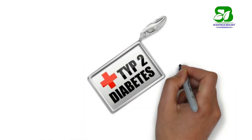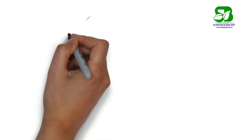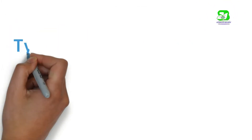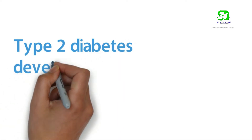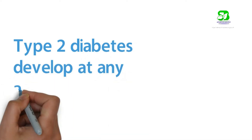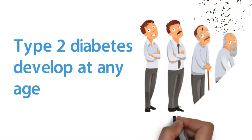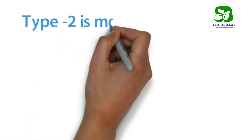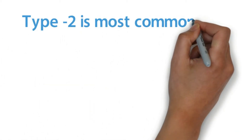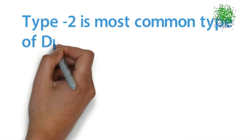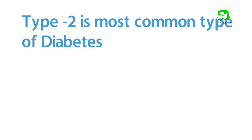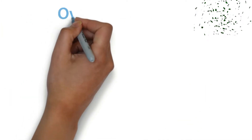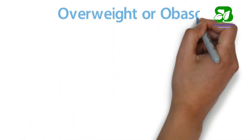If you have Type 2 diabetes, your body doesn't use insulin well. Type 2 diabetes can develop at any age, even during childhood. Type 2 diabetes is the most common. Lifestyle is an important factor in developing Type 2 diabetes. You are more likely to develop Type 2 diabetes if you are overweight or obese.